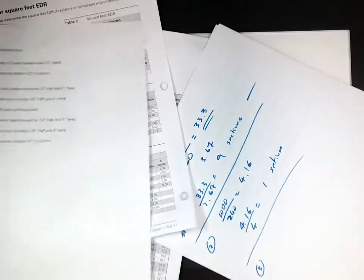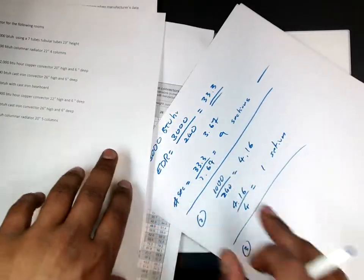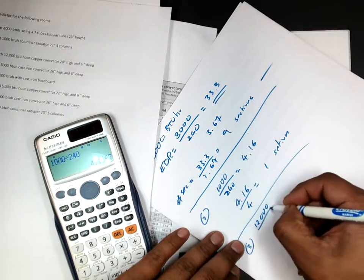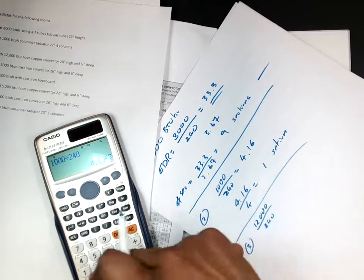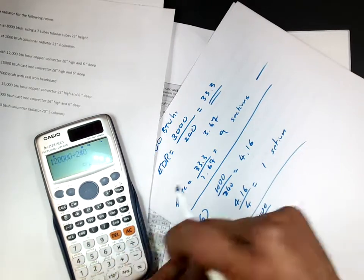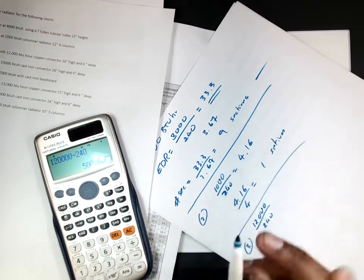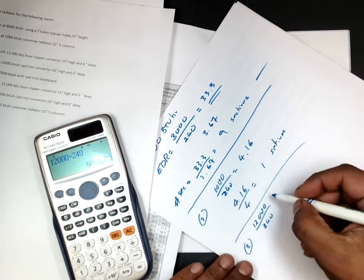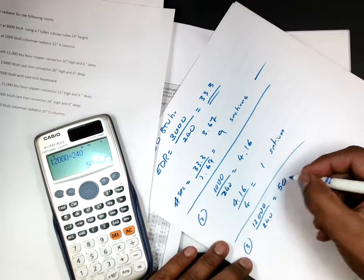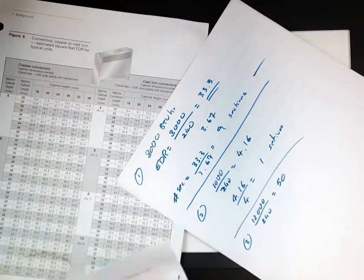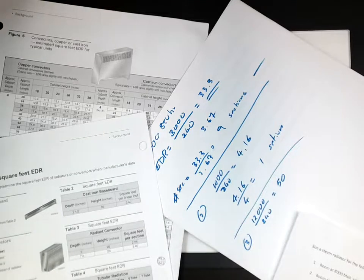Let's try again. We got a room with 12,000 BTU. So 12,000 BTU over 240. Yeah. Thank you. 50. EDR. So now I'm going to go and look up. What am I looking for? 12,000. Copper. Convector.